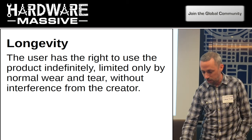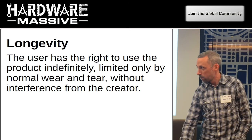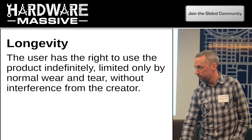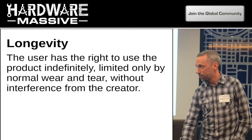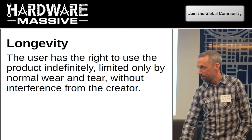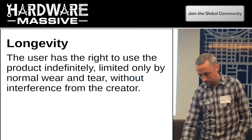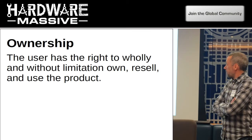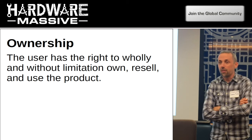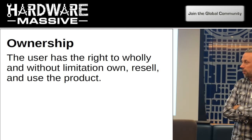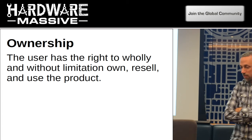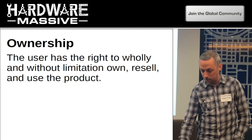The natural lifetime of a product is what longevity means — similar to the FTDI incident, where FTDI had counterfeit devices and changed their drivers so that anyone with a counterfeit device would have it bricked, affecting people who bought those devices not knowing they were counterfeit. Ownership is a pretty simple one: I can resell this thing. I'm not leasing it and I'm not under any covenant or lien after I buy a product that limits how I use it or who I give it to.